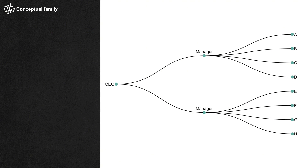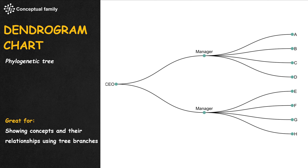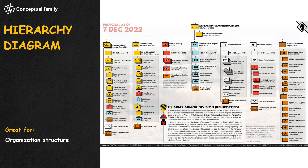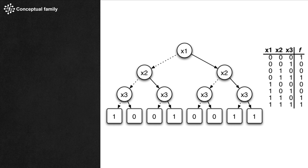Finally, the sacred and most popular chart in consulting is the dendrogram chart, which represents concepts and their relationships using tree branches. When a dendrogram chart is used to draw an organization structure, we have the hierarchy diagram.